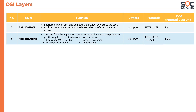Next, we have layer 6 — the presentation layer. In this layer, the data from the application layer is extracted and manipulated into the required format for transmission over the network. Things like translation, encryption and decryption, encoding and decoding, and compression and decompression happen here. Computers are responsible for the functions of the presentation layer. Protocols include JPEG, MPEG, TLS, SSL, etc. The data is still data, but in a different format because of encoding, encryption, or compression that may be applied.